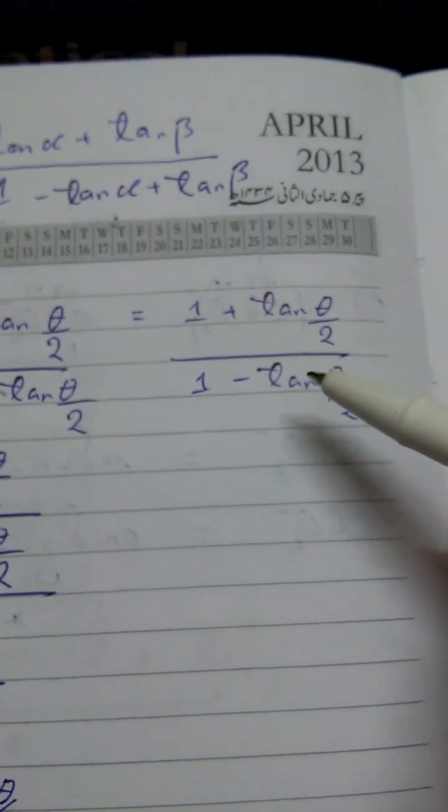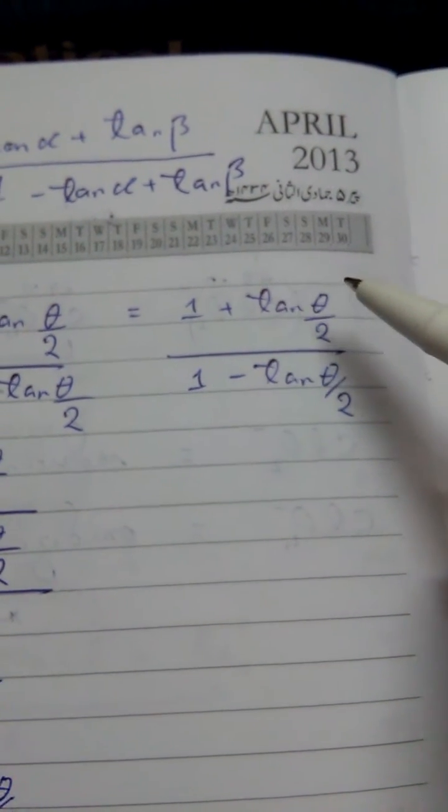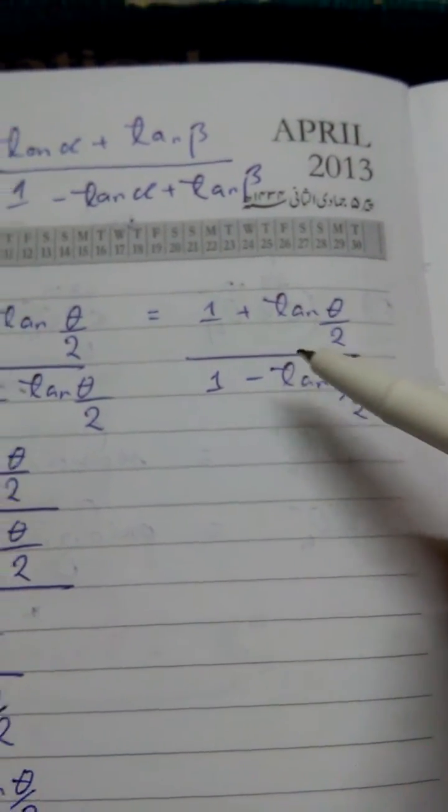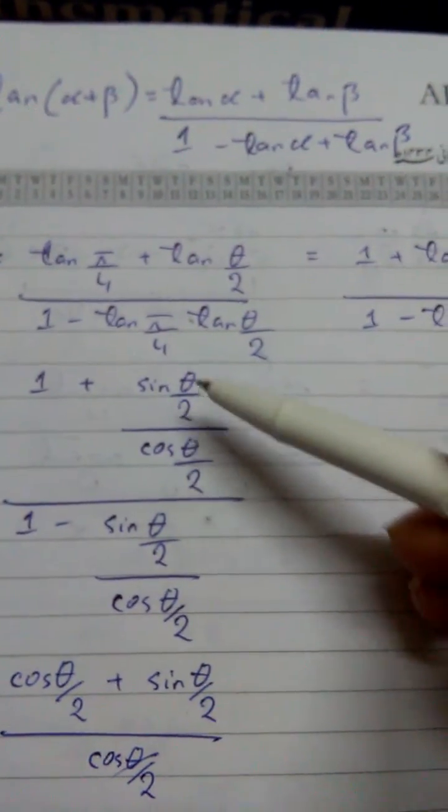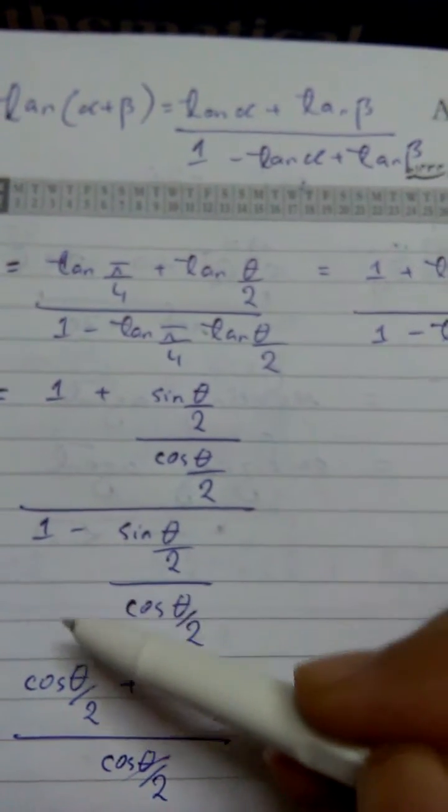Now at the place of your tan θ/2, you can put sin θ/2 upon cos θ/2 at the place of your tangent. And that's what we have done in the numerator as well as in the denominator.